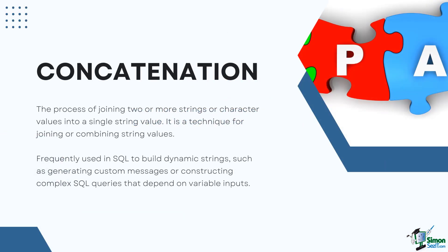In SQL, the process of joining two or more strings or character values into a single string value is referred to as concatenation. It is a technique for joining or combining string values. Concatenation is frequently used in SQL to build dynamic strings, such as generating custom messages or constructing complex SQL queries that depend on variable inputs.